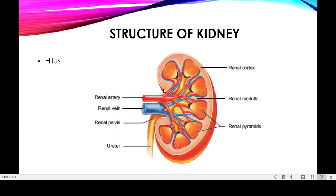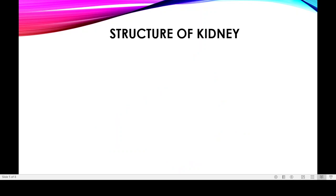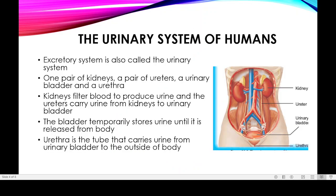The kidneys are located one on each side of the vertebral column, and each kidney is protected by two ribs. The left kidney is positioned slightly higher than the right kidney.